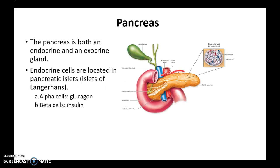Moving on to the pancreas — the pancreas is a mixed gland with both exocrine and endocrine functions. For this lecture, we will focus on the endocrine functions. The endocrine cells are located in specific pancreatic islets, also called islets of Langerhans. We will focus on two types of cells: the alpha cells that produce glucagon, and the beta cells that produce insulin.